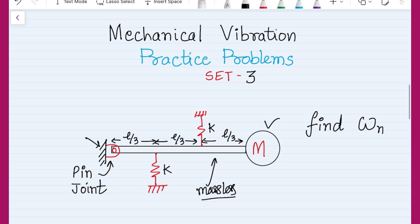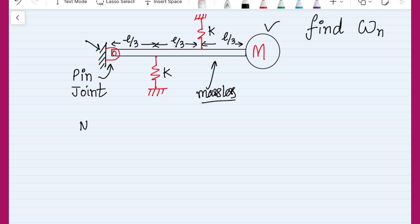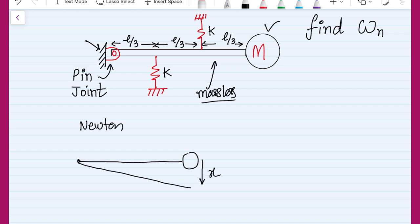I am going to explain the solution using both methods. First, the Newton's approach. When we apply Newton's approach, we can use either x or θ as the generalized coordinate. In this problem, when the mass vibrates it moves in the vertical direction, and if the mass moves by x, the member also rotates by θ. I recommend using θ as the generalized coordinate because it allows us to directly correlate the deformation of both springs. We know x equals l·θ.